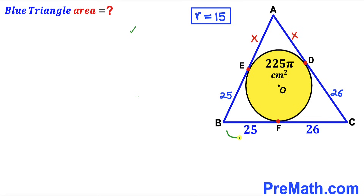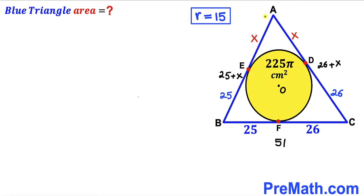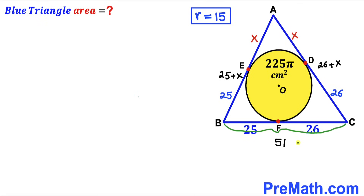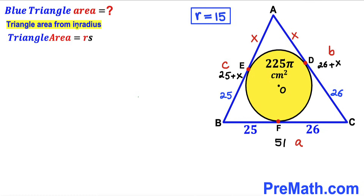Now let's calculate the full side lengths of the blue triangle. Side BC = 25 + 26 = 51 cm. Side AB = 25 + x. Side AC = 26 + x. We represent BC as lowercase a, AC as lowercase b, and AB as lowercase c.